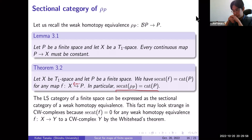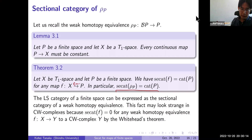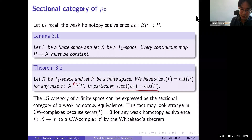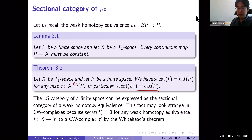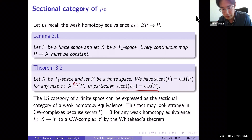Therefore, the LS-category of a finite space is expressed as the sectional category of a weak homotopy equivalence. This looks slightly strange in the setting of nice CW complexes: if P is a CW complex, a weak homotopy equivalence to P has a global homotopy section by the Whitehead theorem, so its sectional category must be zero — not equal to the LS-category of the codomain unless it is contractible. This phenomenon happens in finite spaces but not in general spaces.